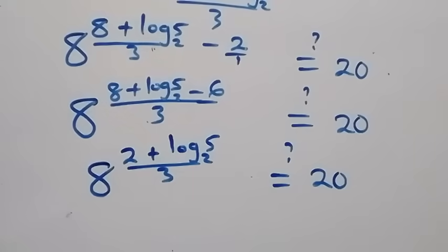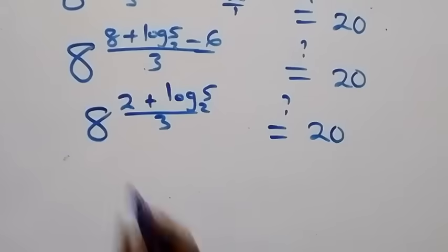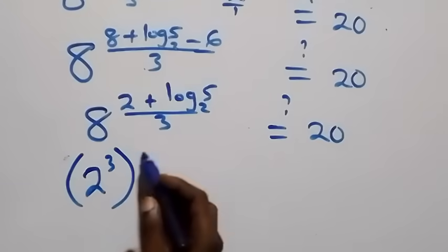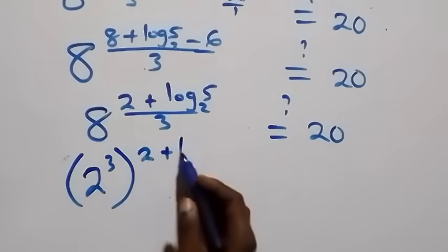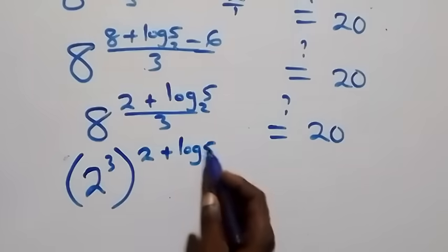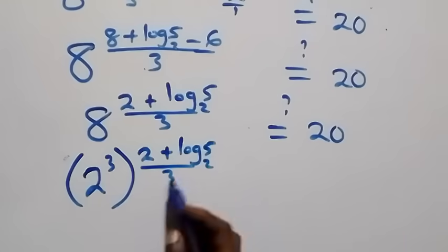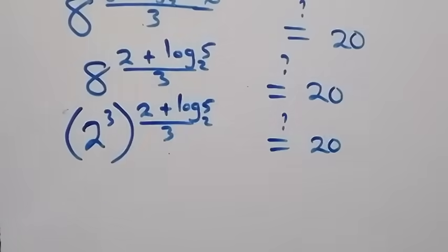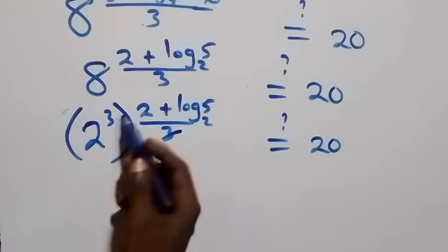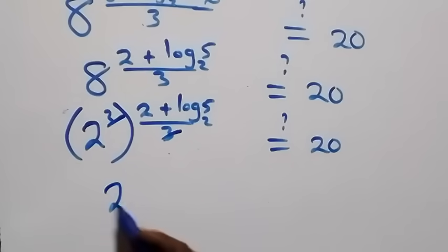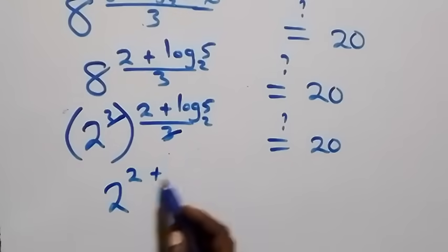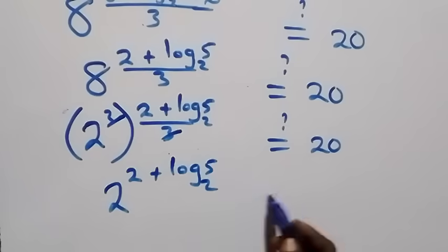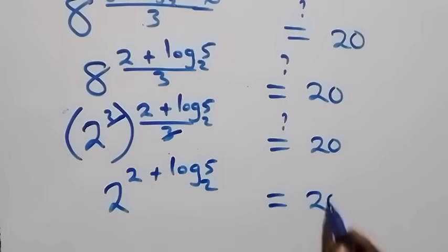We can express 8 as 2 raised to power 3. So we have 2 cubed raised to power (2 plus log₂5) over 3, and the 3 cancels. We get 2 raised to power 2 plus log₂5, which should equal 20.